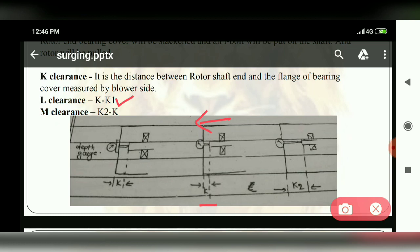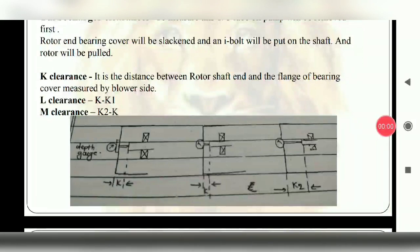Now the third clearance is M clearance. First we have pulled the left side, now we will push the right side. So our distance will be K2 and that will be bigger than K1. So the M clearance will be K2 minus K.